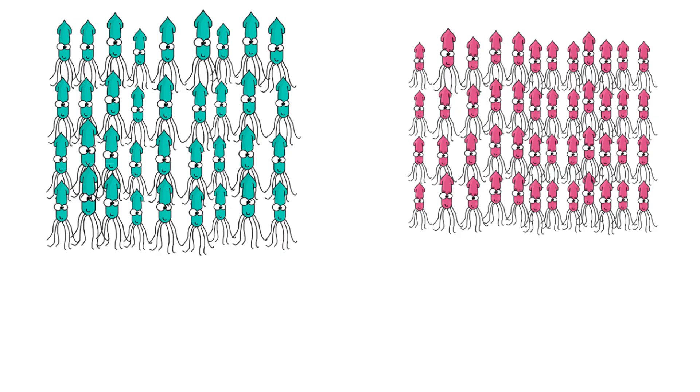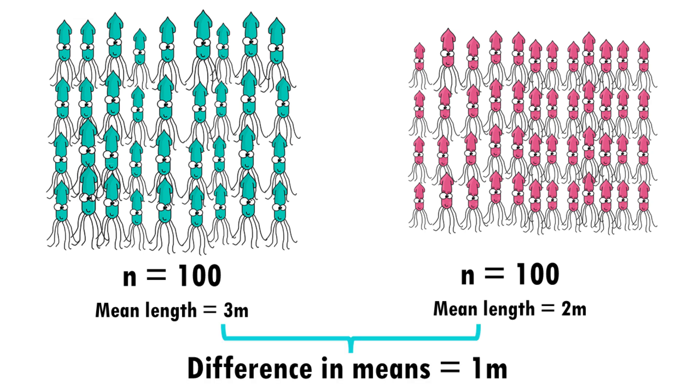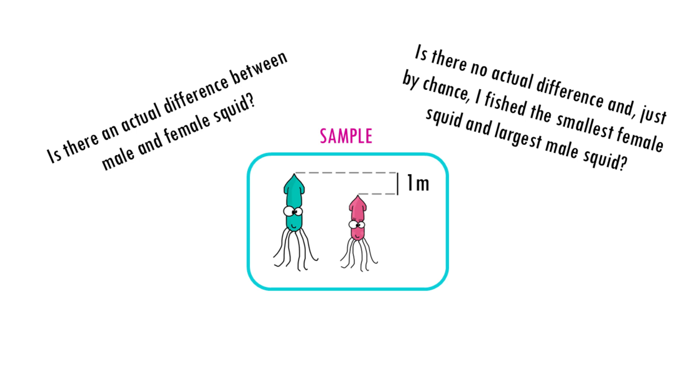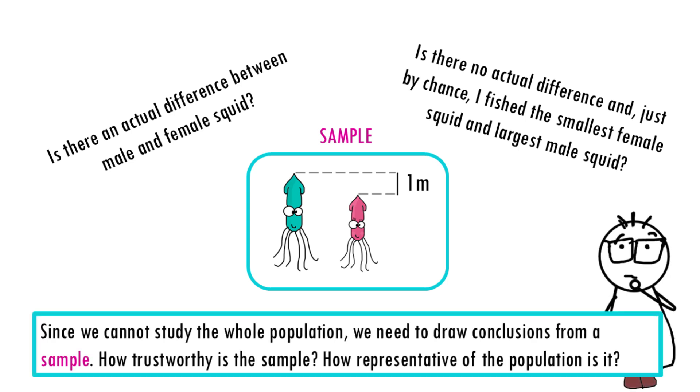You collect some samples and the means of these two samples are different. At this point there are two possibilities. The samples really have different means, or the other possibility is that the difference that is observed is a coincidence of random sampling, so just by chance you fished the smallest female squids in the population and the largest male squids. However, there is no way to confirm any of these possibilities.